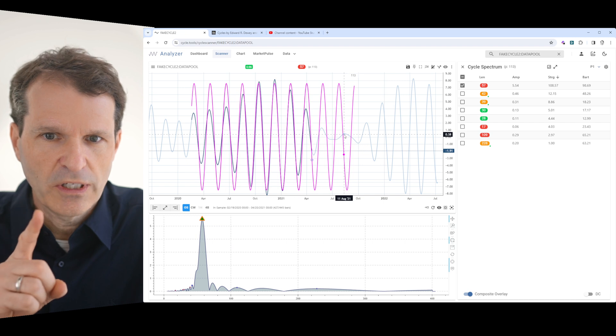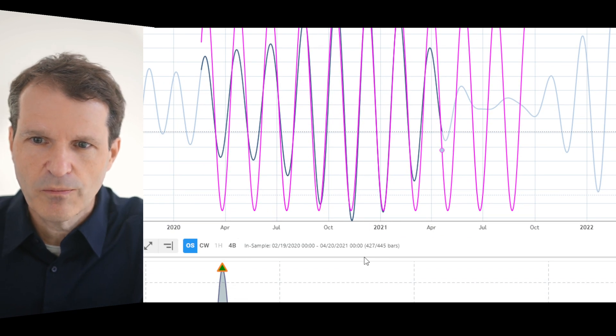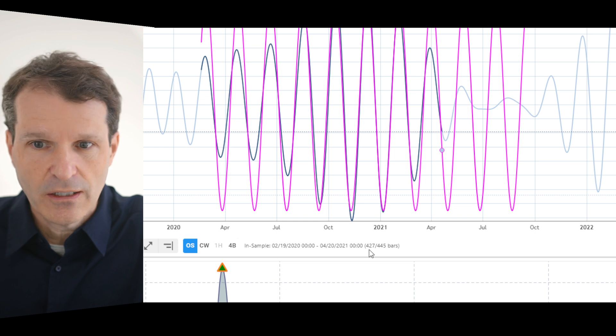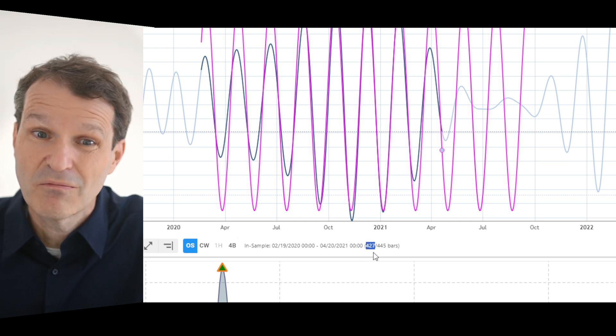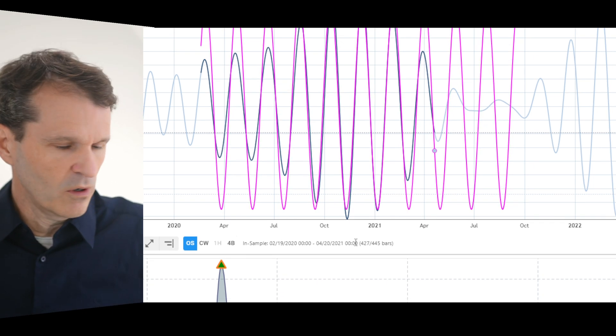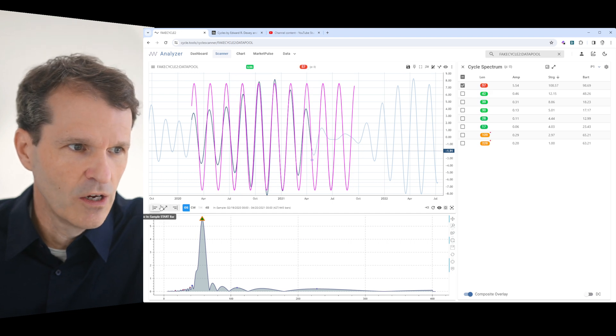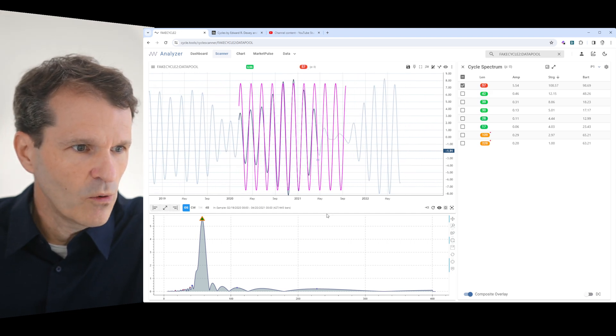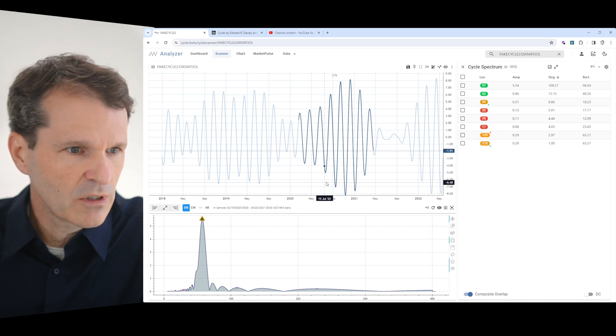When we analyze cycles, you need to be clear about how much data you put as an input. Here we just have not enough data used to identify it. The minimum should always be 850 data points. So first, let's use more historical data.